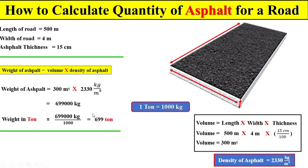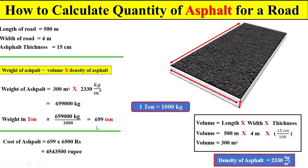Now, dear students, if you want to calculate the total cost of this asphalt, we just multiply the total weight in tonnes by the price of 1 tonne of asphalt, and we can get the total cost of asphalt. This is our today's topic. I hope you will learn something new from this lecture. If you have any question related to this topic, please comment on my channel — I will try to reply. See you in the next video, thanks for watching.